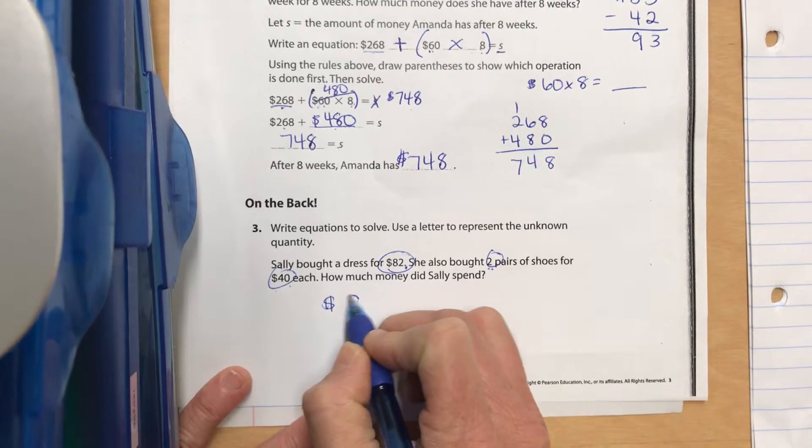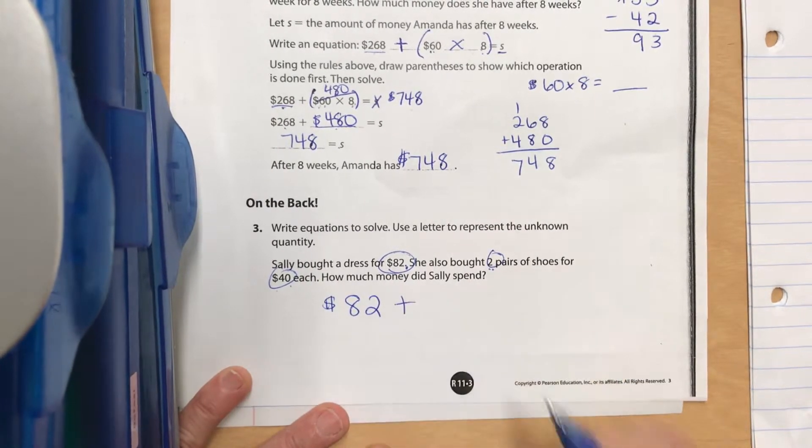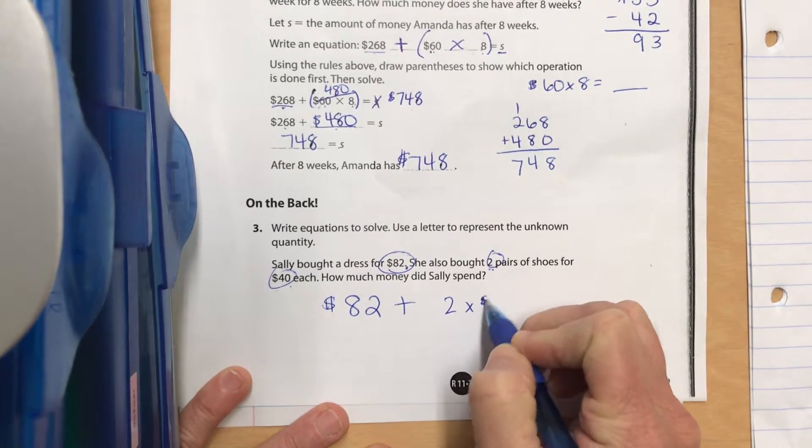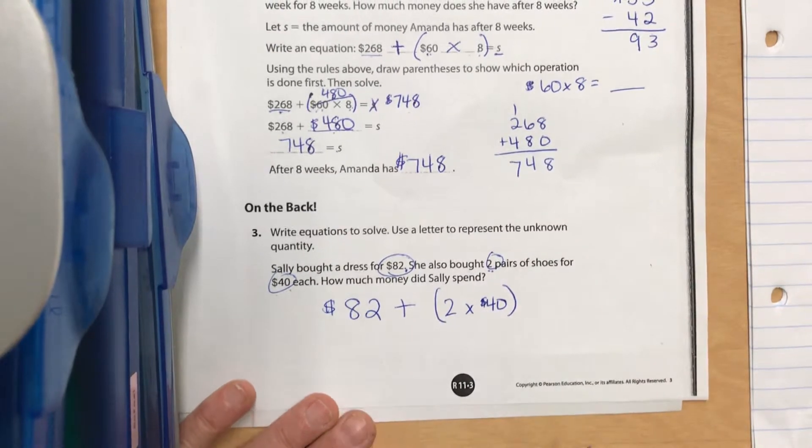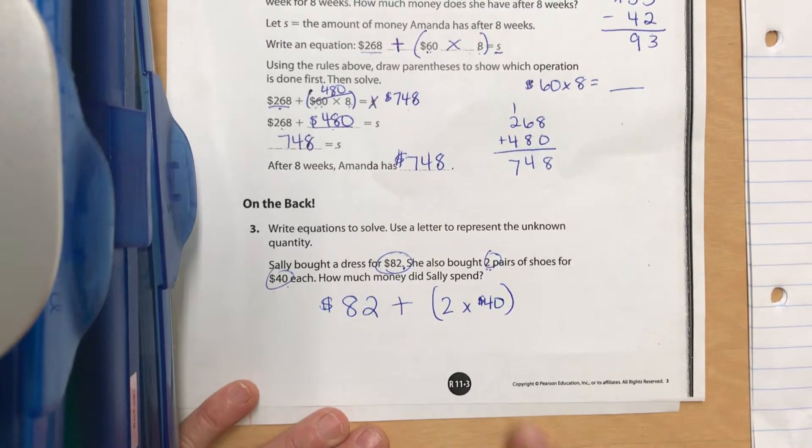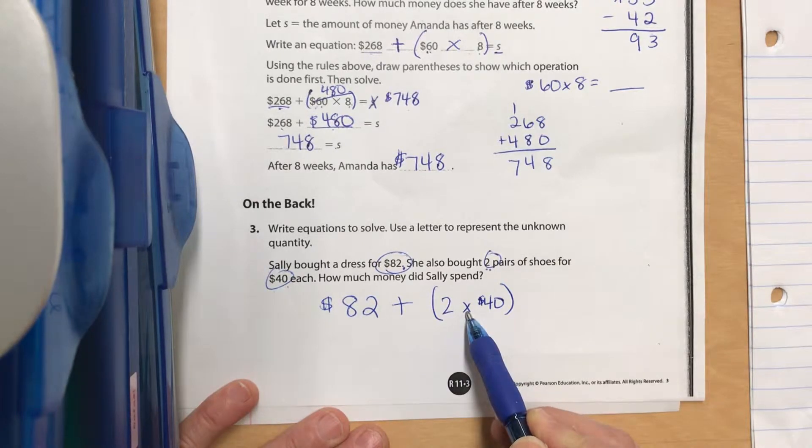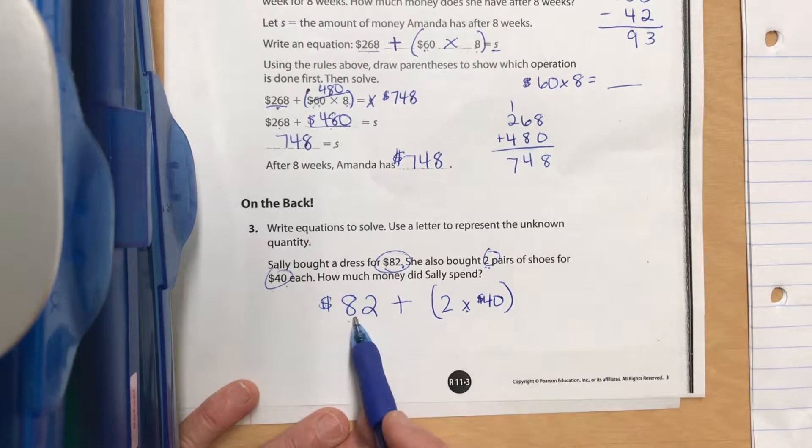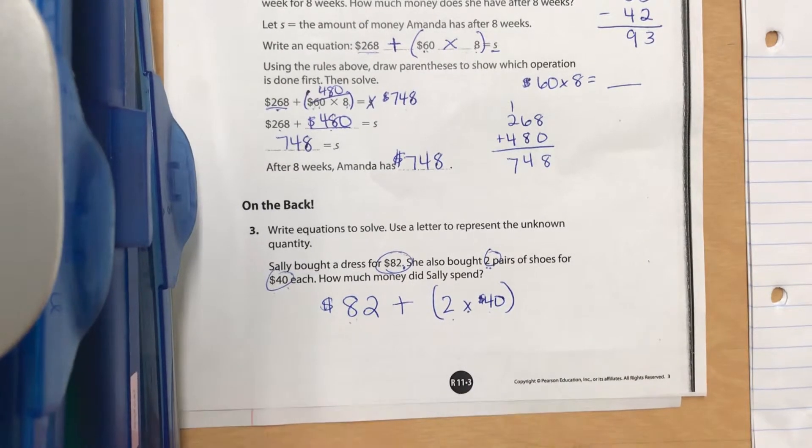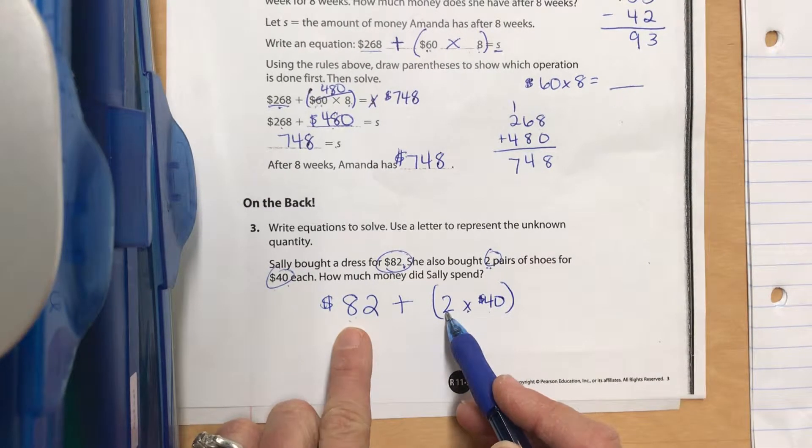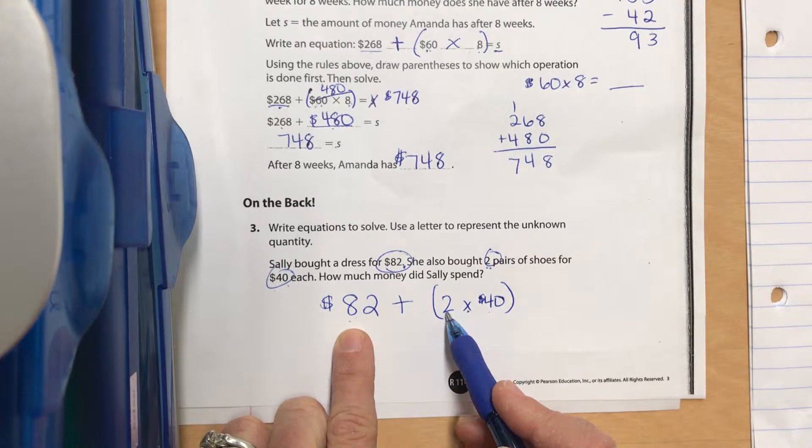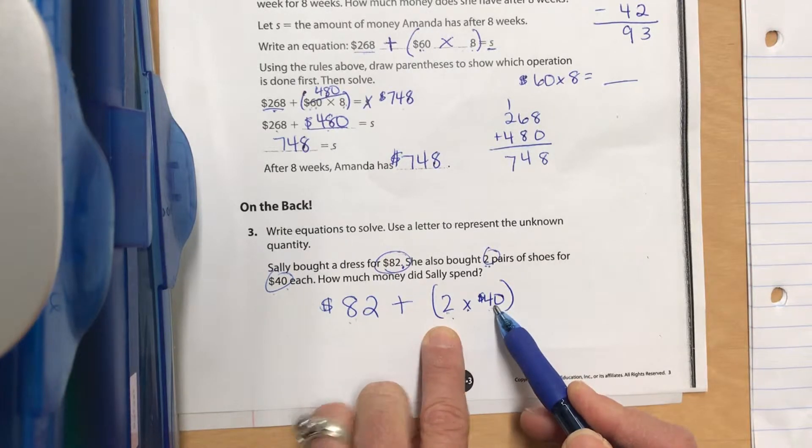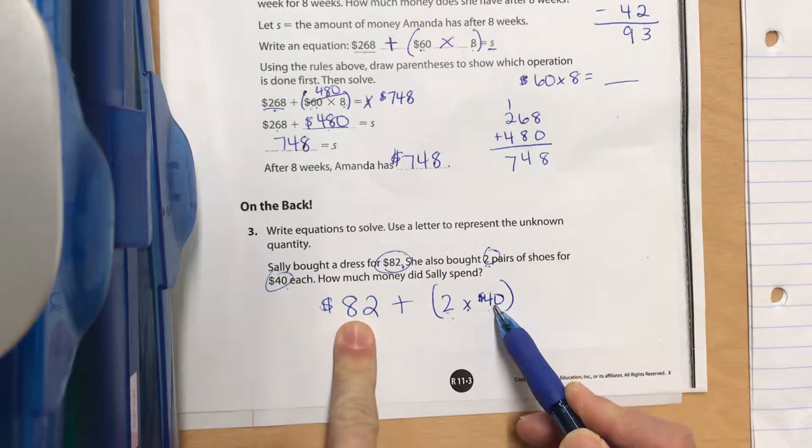We have $82 plus she bought two pairs of $40 shoes. I put that in parentheses because I always have to do my multiplication first before I can add numbers to that. I don't want to do 82 plus 2 and then multiply by 40, because she didn't buy 84 pairs of shoes at $40. She bought two pairs of shoes at $40 and then we're going to add the price of the dress in.